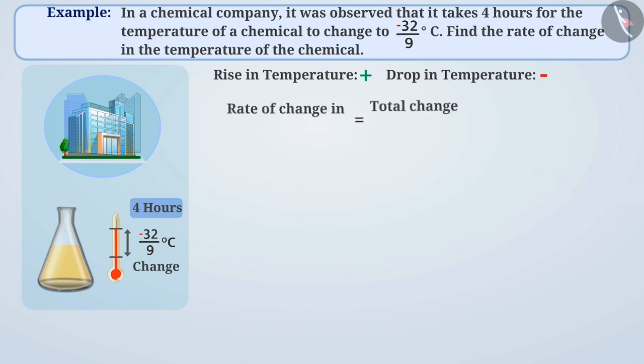For this, we will have to divide the total change by the total time. That is, we have to find the result of minus 32 by 9 divided by 4.